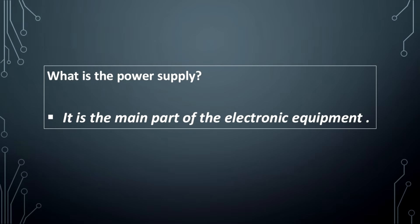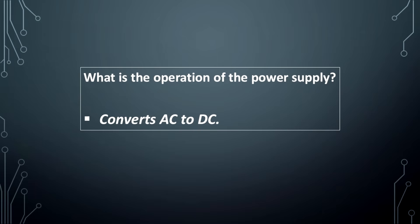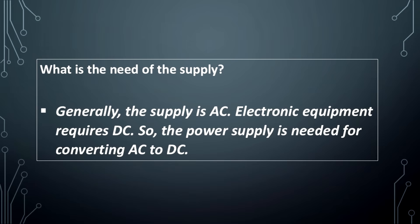What is the power supply? It is the main part of the electronic equipment. What does the power supply give? It gives the DC voltage. What is the operation of the power supply? Converts AC to DC.